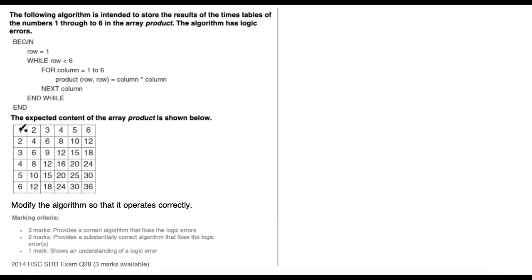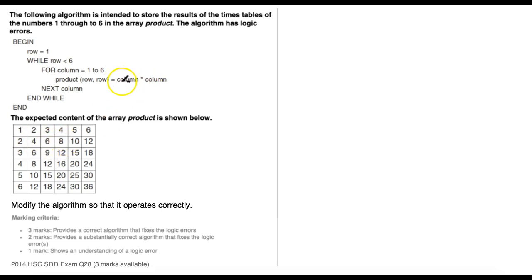What it should actually be doing is going through each row, and every time it goes through a row it goes through each column. So row one, column one; row one, column two; row one, column three and so on. Then in the next iteration of the while loop, row should update to two: row two column one, row two column two, row two column three and so on. That's not happening, and also even if it were, we're not multiplying the row by the column — we're multiplying column by column.